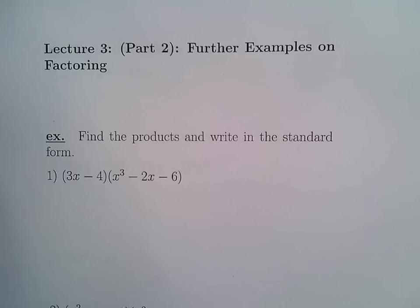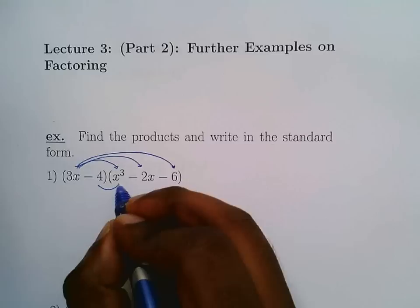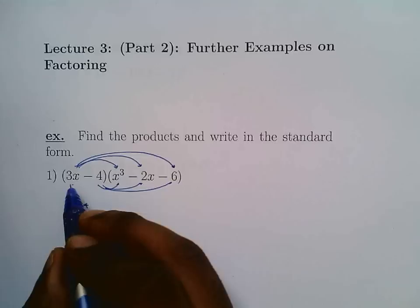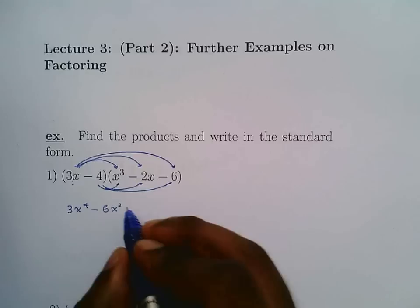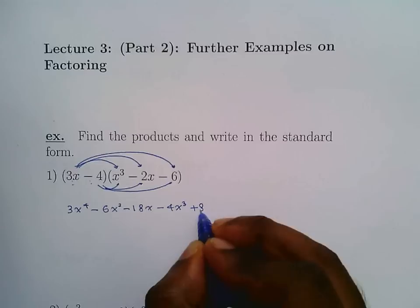The first example is multiplying polynomials. It's not FOIL because there are six terms, so it's just distribution — these three terms with those three terms. 3x times x³ is 3x⁴, 3x times -2x is -6x², 3x times -6 is -18x. Then -4 times x³ is -4x³, -4 times -2x is +8x, and -4 times -6 is +24.